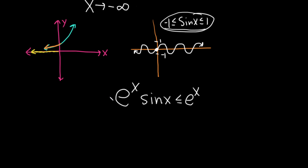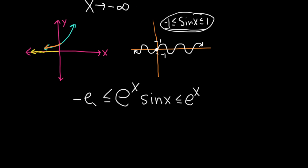Likewise, sine x is greater than or equal to negative 1, so e to the x times sine x is greater than or equal to e to the x times negative 1, which is just negative e to the x. So we have negative e to the x ≤ e to the x times sine x ≤ e to the x, because sine is bounded between these values.